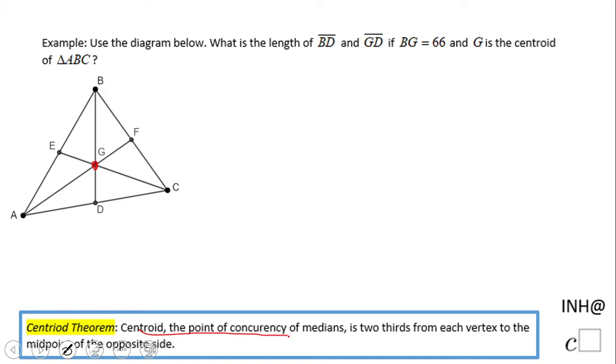A centroid is the point of concurrency of medians. In other words, AF is a median so BF and FC are congruent. BG is a median so these two segments are congruent. And EC is a median, so these are congruent. G is the point of concurrency of these three medians.